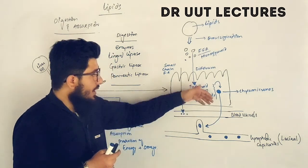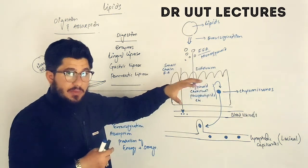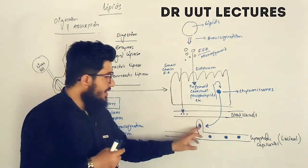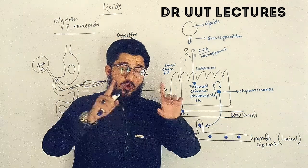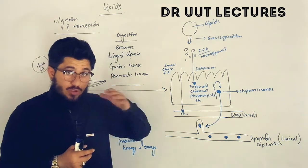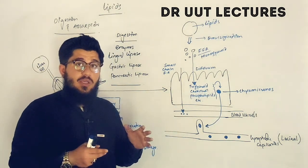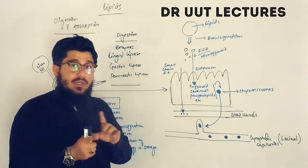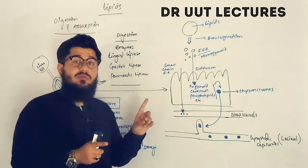The chylomicrons carry all the triglycerides, cholesterol, vitamins, proteins, etc. into the lacteals, then through the lymphatic capillaries, traveling throughout the body. While traveling, they provide energy to the body and are also stored in the adipose tissues. Later, when there is a deficiency or need for energy, this stored lipid can be utilized. Eventually, the lymphatic system joins the blood vessels, allowing these lipids to enter circulation.